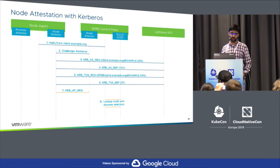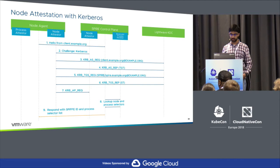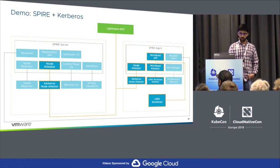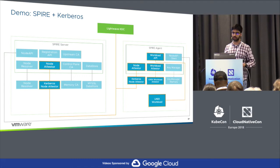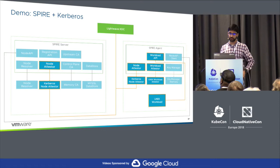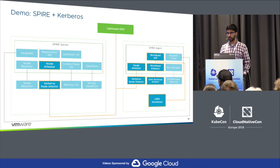Here's a bird's-eye view of the demo. On the left we have the SPIRE server, which is also a domain controller running the Kerberos node attester server. On the right we have the SPIRE agent — another VM domain-joined to the Lightwave domain running from the SPIRE server. Once the SPIRE agent is attested, we'll register a new Unix workload for that host, and then simulate the workload API to show it's getting the correct identity after attestation.